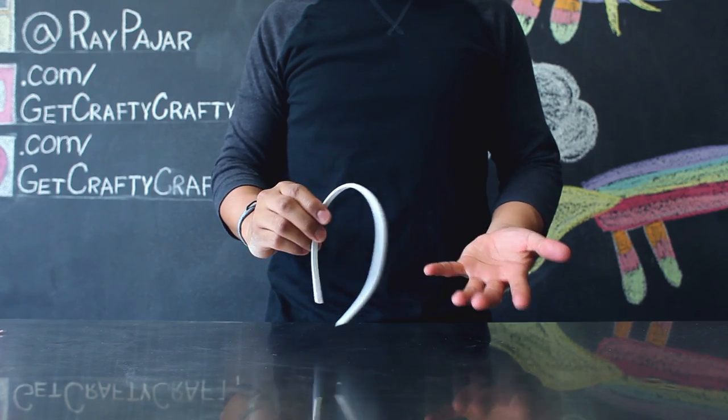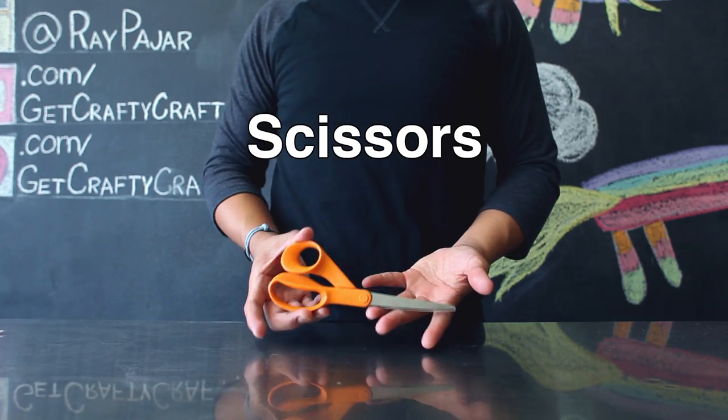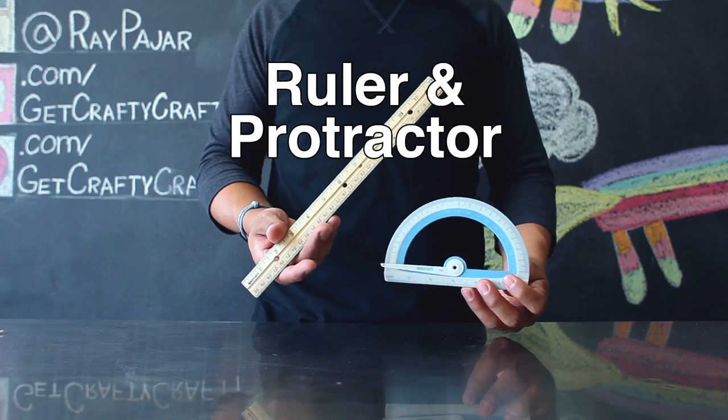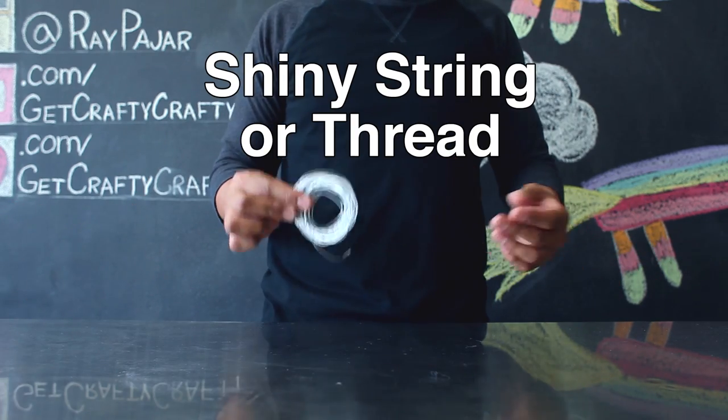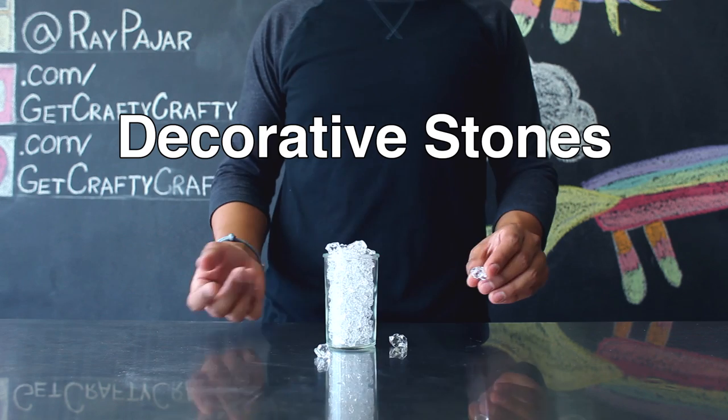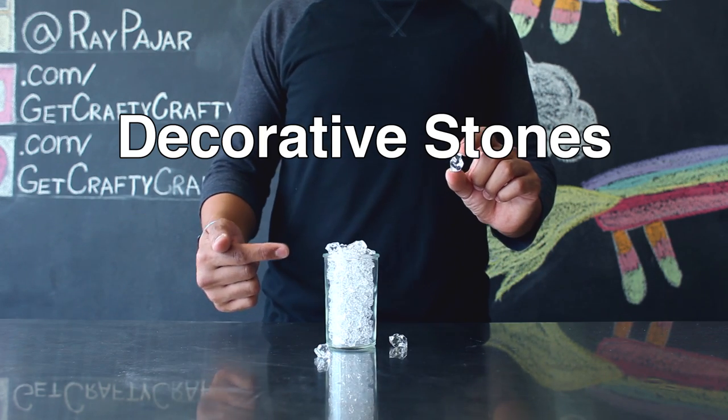The items that you'll need for today's project include a headband, scissors, a ruler and a protractor, pillow stuffing, hot glue sticks, a hot glue gun, shiny stringer thread, assorted felt, and as an optional item, some decorative stones.